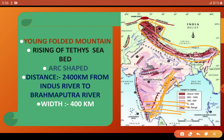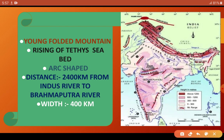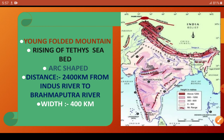This is a Young Folded Mountain and it is arc-shaped. The distance from the Indus River to the Brahmaputra River is 2400 km. The average width from the Indus side to the Brahmaputra side is 400 km.